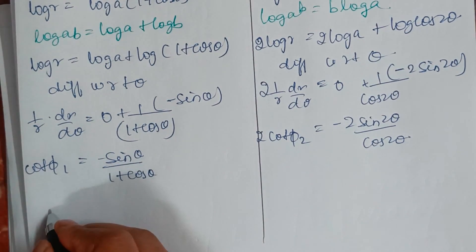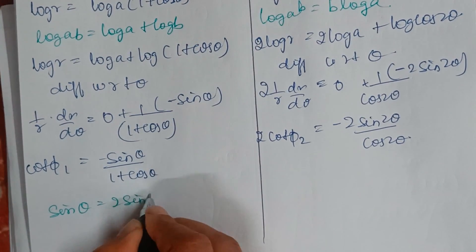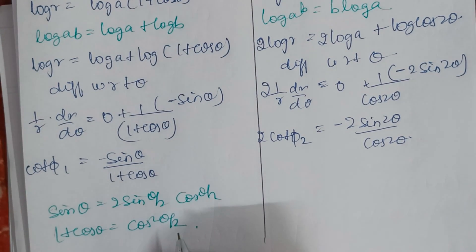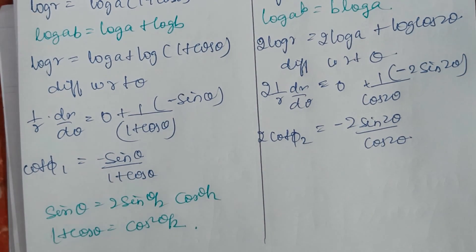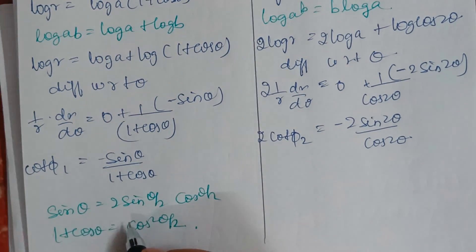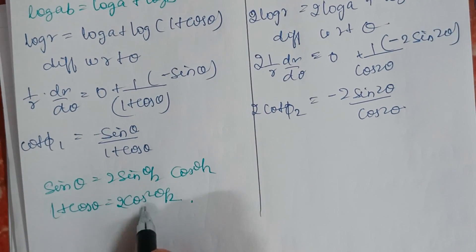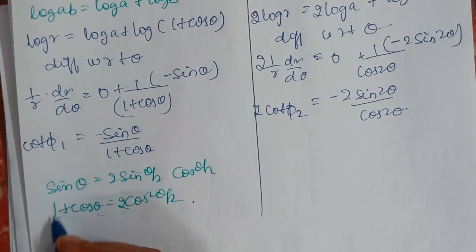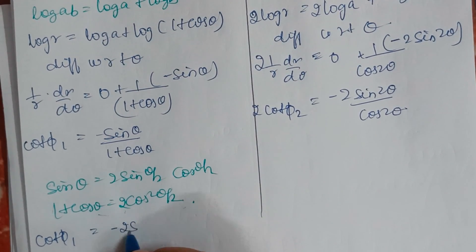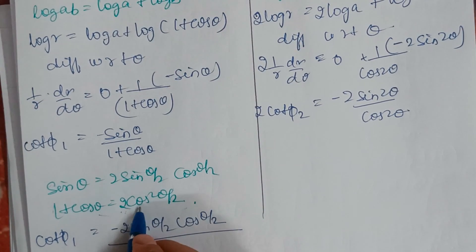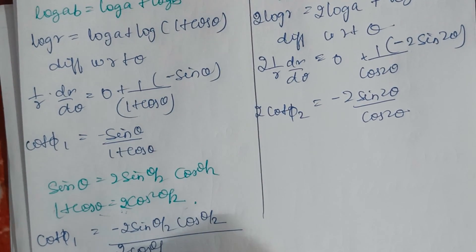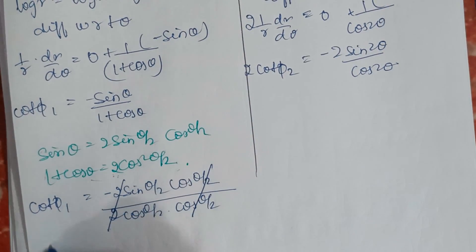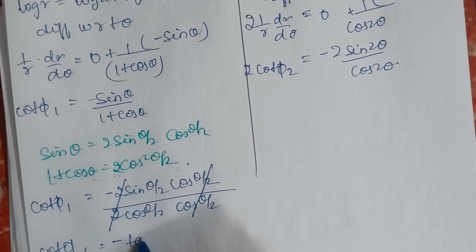Using half-angle formulas: sin θ = 2 sin(θ/2)·cos(θ/2) and 1 + cos θ = 2 cos²(θ/2). So cot φ₁ = −[2 sin(θ/2)·cos(θ/2)] / [2 cos²(θ/2)]. The 2's and one cos(θ/2) cancel, leaving cot φ₁ = −sin(θ/2)/cos(θ/2) = −tan(θ/2).